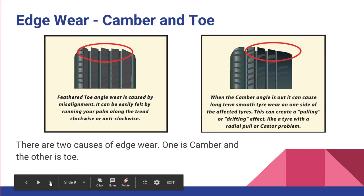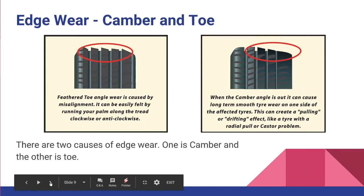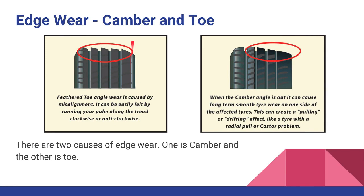Next we'll talk about edge wear — wear on only one side of the tire. Unlike under-inflation which wears two sides, this type is only on one side. Two things can cause it: camber and toe. Toe wear usually leaves a feathered edge, and you can see here the edges on one side of the tread are a little higher than the other. Camber wear tends to wear off the edge. Both are alignment issues, and the only fix is to replace the tire and do an alignment.